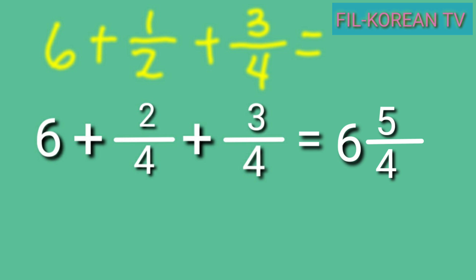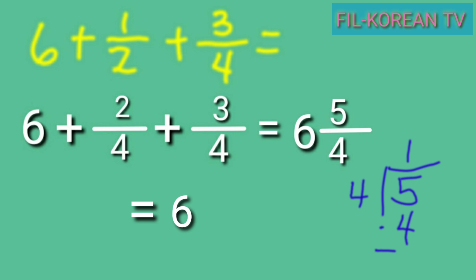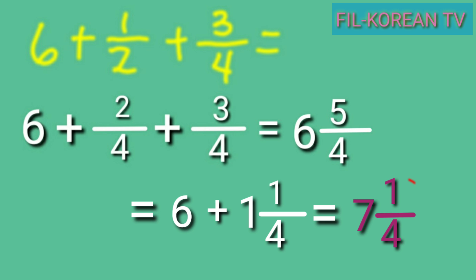But we can reduce this to lowest terms, or simplify the answer, because the fraction is an improper fraction — the numerator five is greater than the denominator four. So we need to simplify it by dividing the numerator by the denominator. Copy the whole number six, then simplify the fraction and add to the whole number. Five divided by four equals one with a remainder of one, so five fourths is one and one fourth in simplest form. Add one and one fourth to the whole number: six plus one equals seven, then copy the fraction one fourth. So the answer is seven and one fourth.